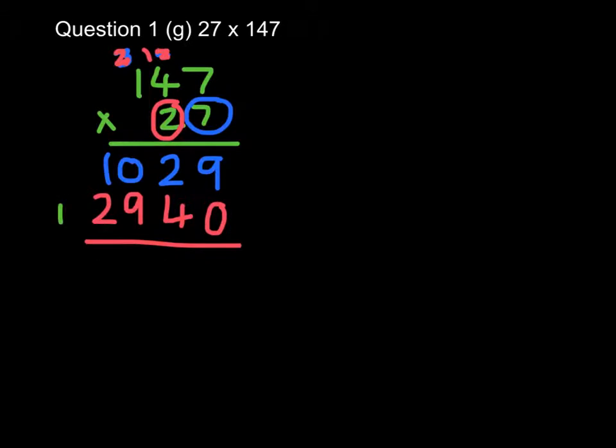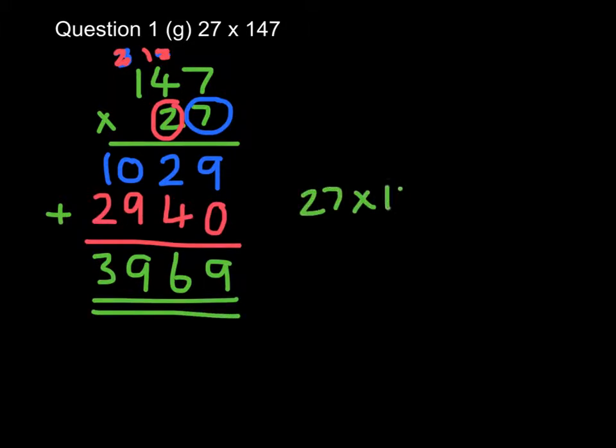Add those together and get 9, 6, 9, 3. So 27 times 147 equals 3,969.